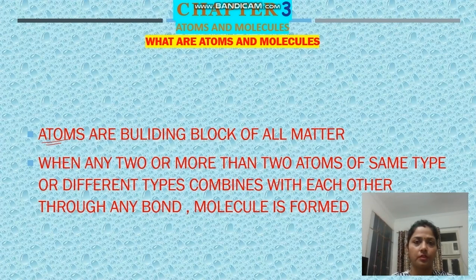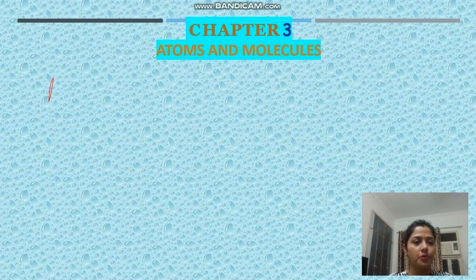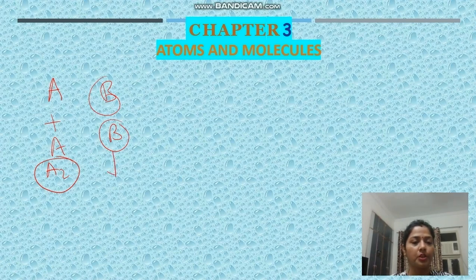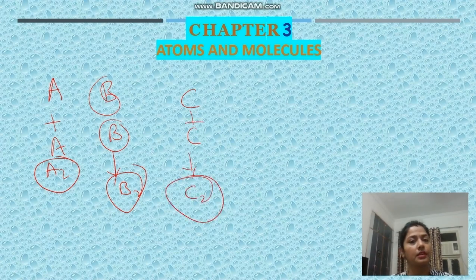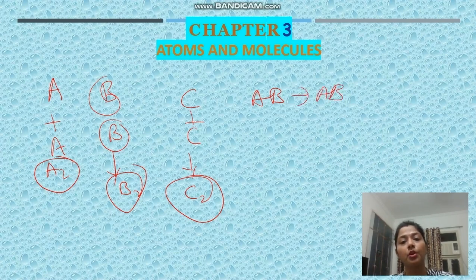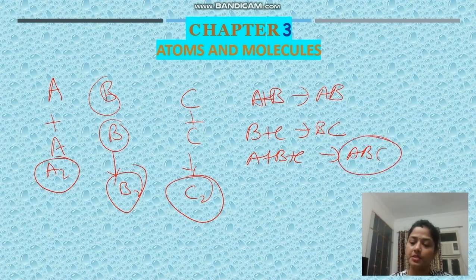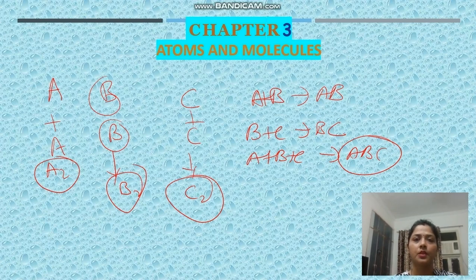I will explain this with examples. Suppose atom A and atom A of the same type combine to form an A2 molecule. B and B combine to form a B2 molecule. C and C combine to form a C2 molecule. Similarly, A plus B plus C can form an ABC molecule. So atoms of the same type or different types can combine to form molecules.